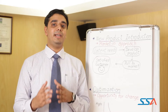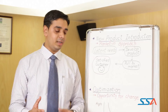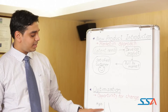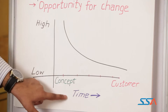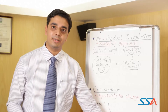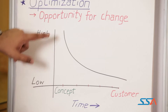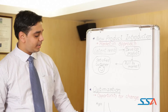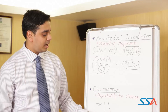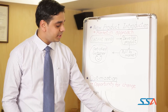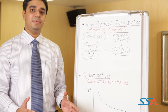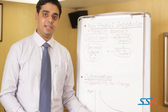Since DFMA is carried out in the design stage of new product design and development, this chart gives us the opportunity for change. The X-axis shows the time from concept to product development until it reaches the customer, and the Y-axis shows the opportunity for change from low to high. We can see clearly that at the concept stage the opportunity for change is very high, and it is very low when the product reaches the customer. Maximum changes can only be done at the concept design stage.